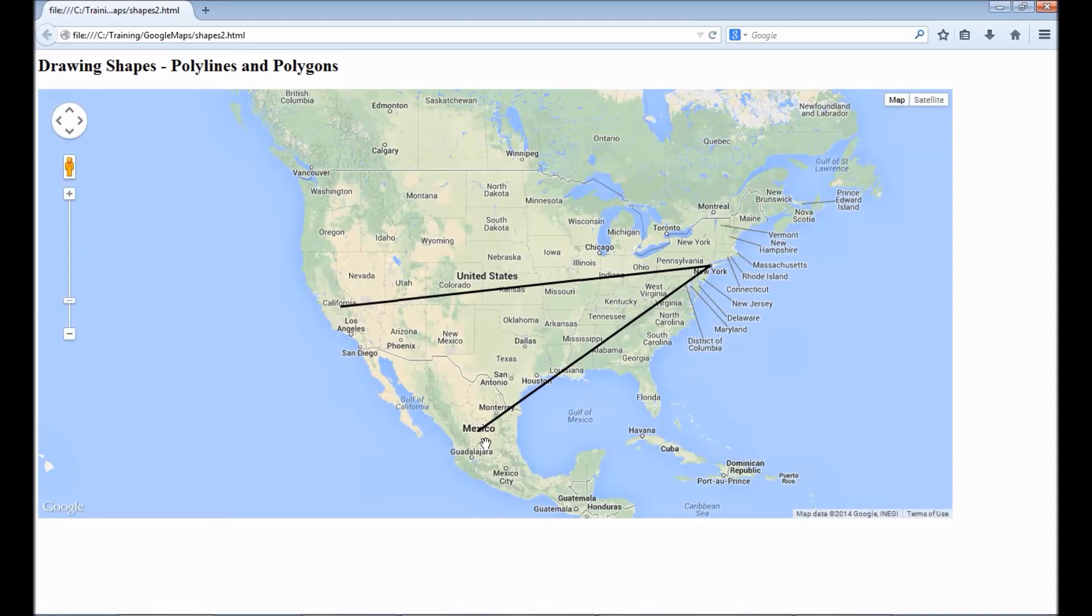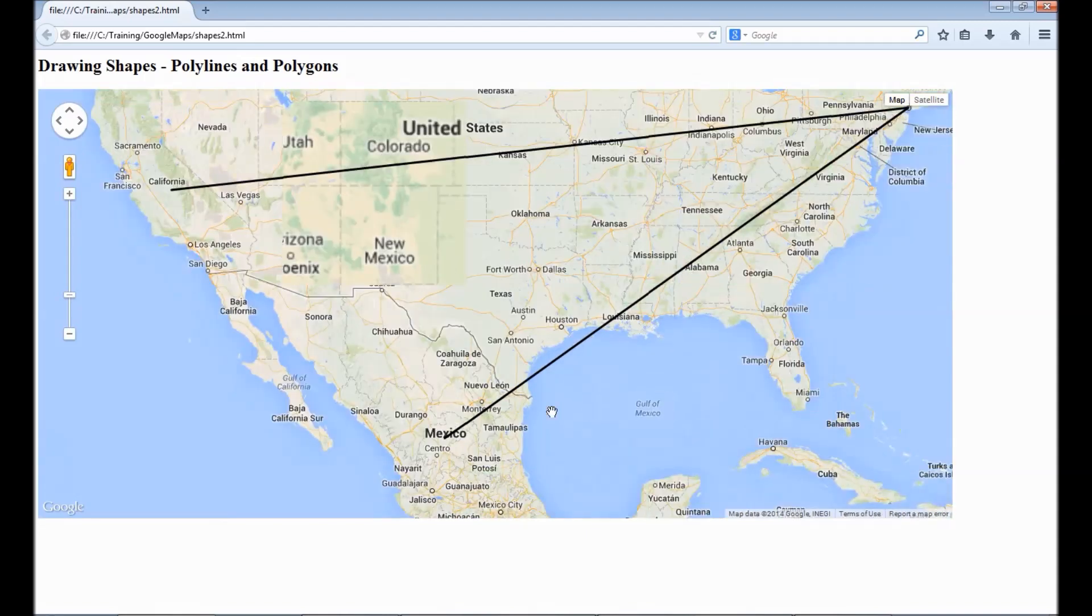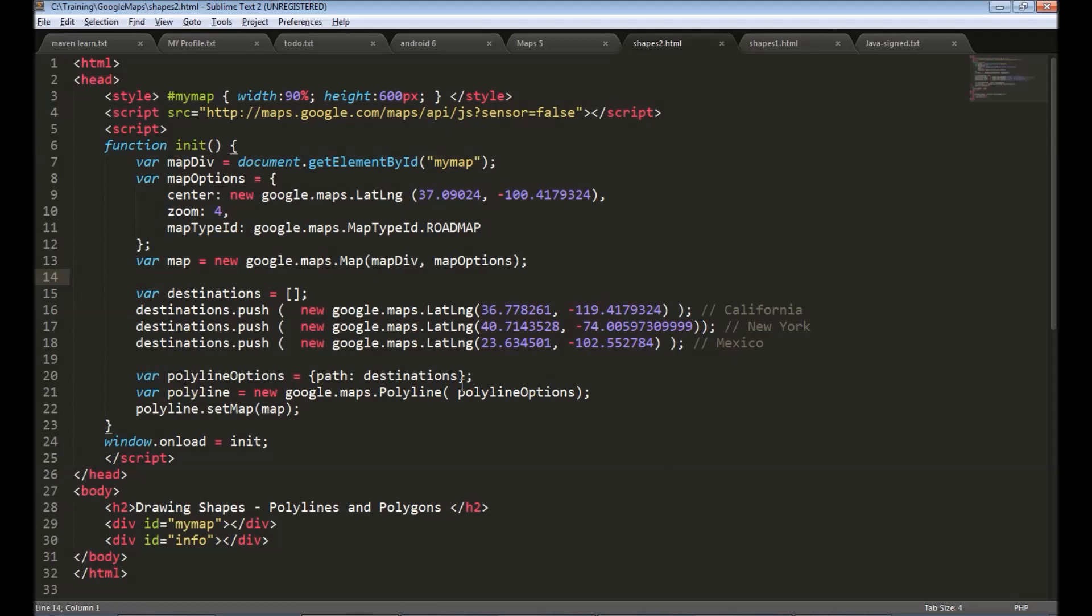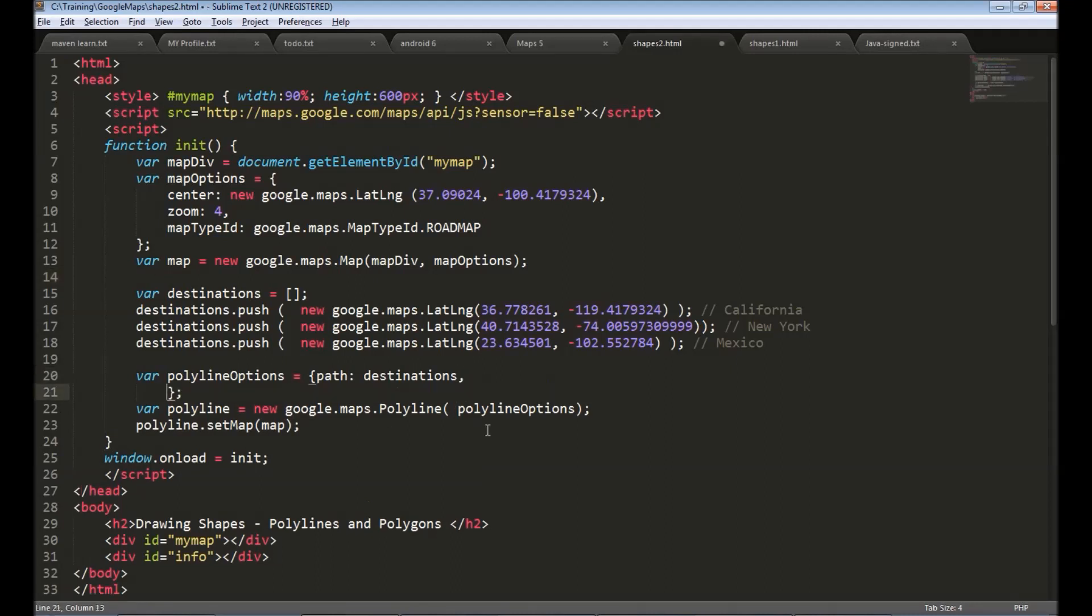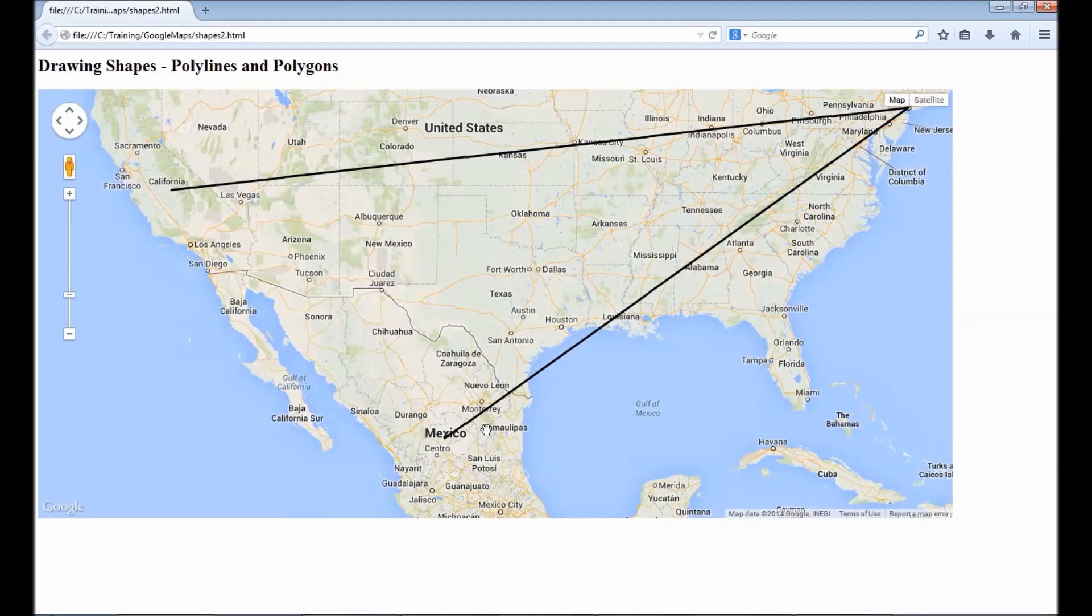By default the color is black and it has a particular thickness. We can customize this using the options. To change the color we use stroke color and say let's use red and to change the thickness of the line you can use stroke weight. Let's say I will give pixel size of 4. Let's reload.